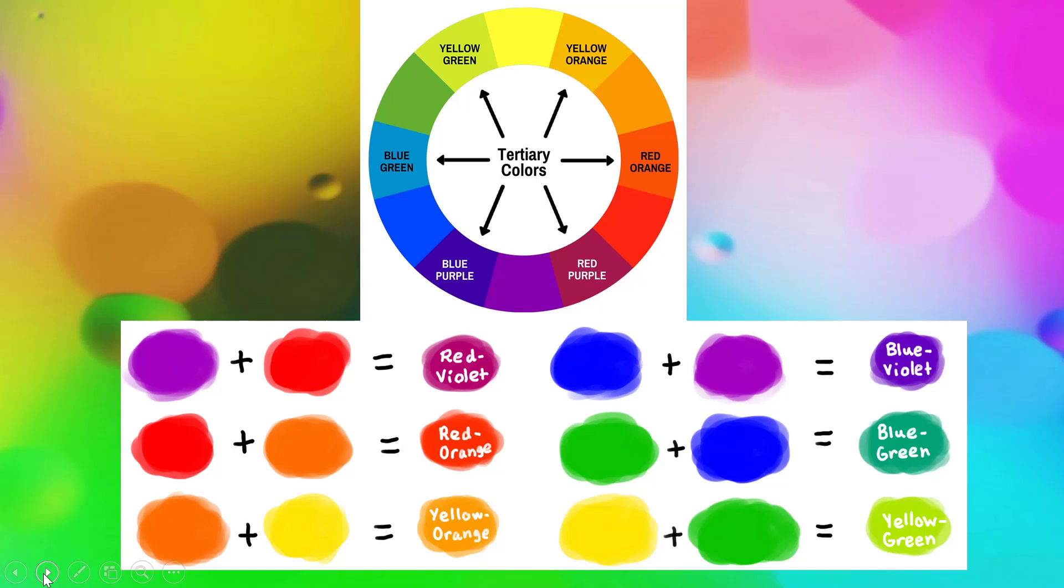The color wheel is always in the same order no matter which way you look at it. It's in the order of the color spectrum.